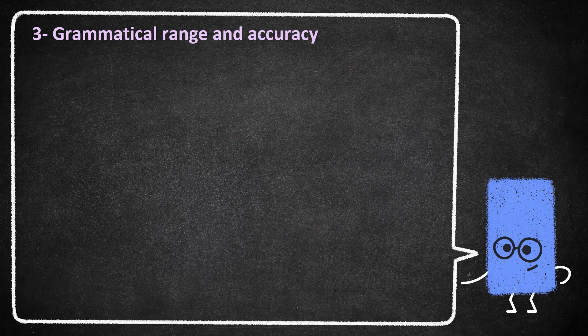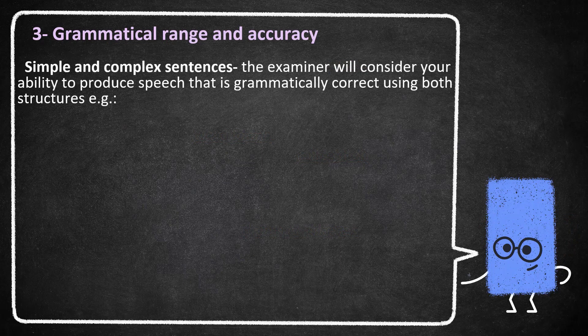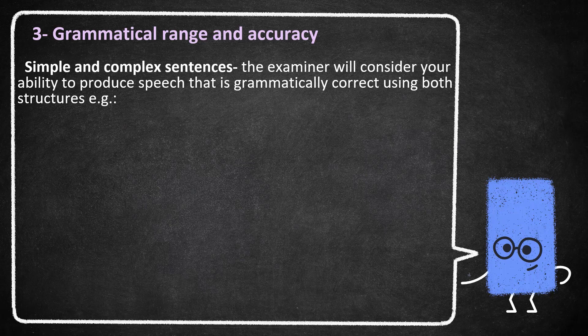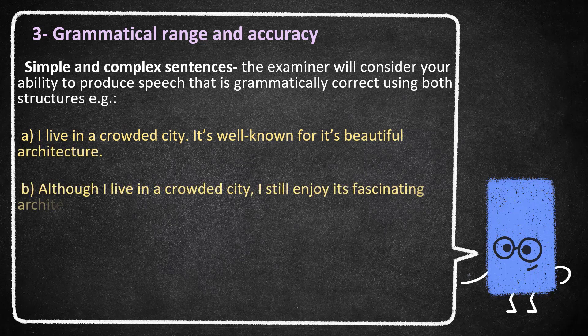The fourth descriptor is grammatical range and accuracy. And this means the use of simple and complex sentences. And here the examiner will consider your ability to produce speech that's grammatically correct using both structures, simple and complex. For example, example A here shows the simple sentences. I live in a crowded city, full stop. It's well known for its beautiful architecture, full stop, two simple sentences, but you can connect them and make one complex structure. Although I live in a crowded city, I still enjoy its fascinating architecture.